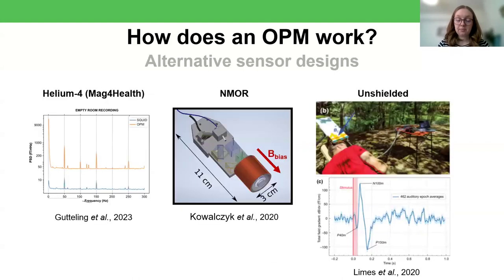However, the bandwidth and frankly many of the OPM properties are quite dependent on the sensor. And so up until now I've really spoken about rubidium or alkali SURF OPMs, but there are actually quite a range of different designs out there. So here are just a very few examples.